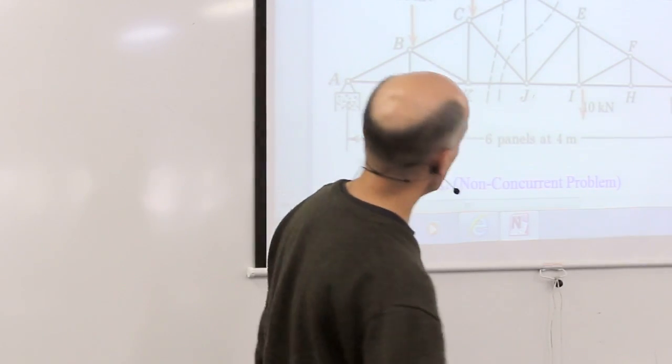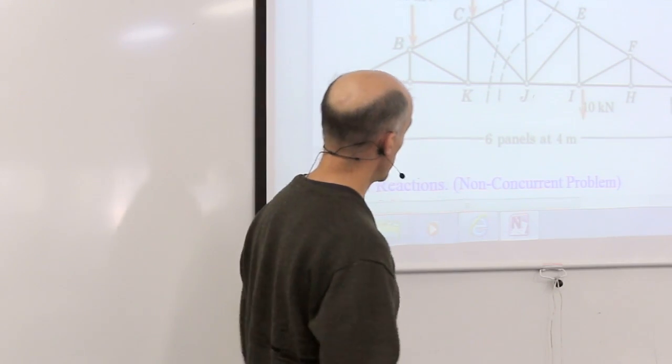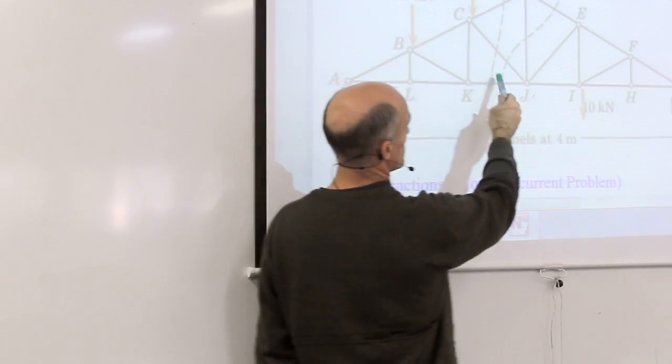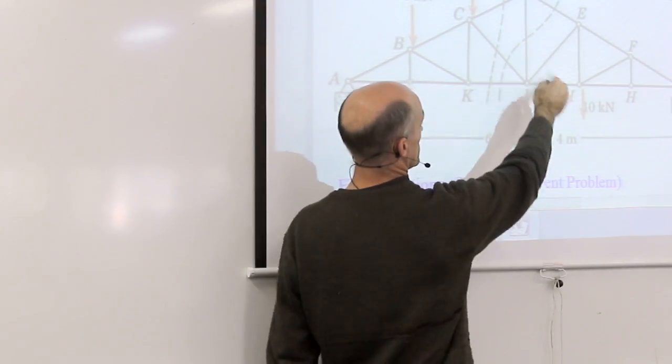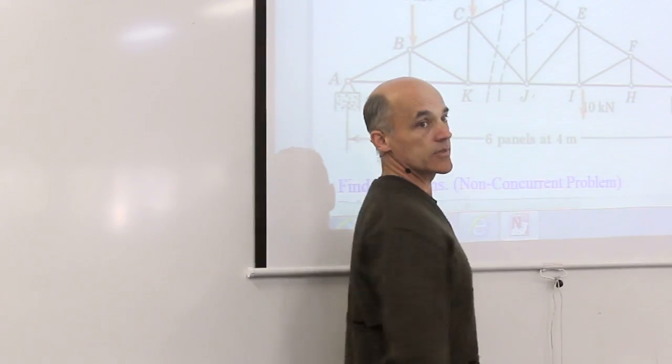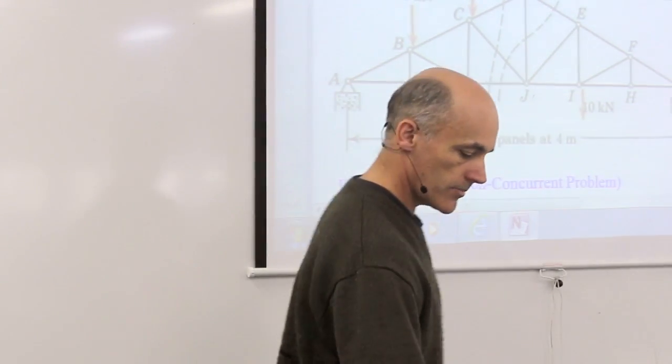Both of these methods work, you can use them both at the same time. You can use them in combination. For example, you could work into the middle of the truss using the method of sections, and then you could use the method of joints to work other members in the middle of the truss. So both methods work.